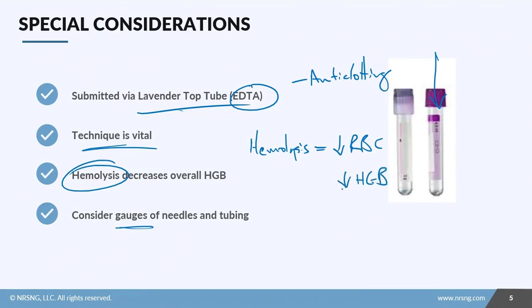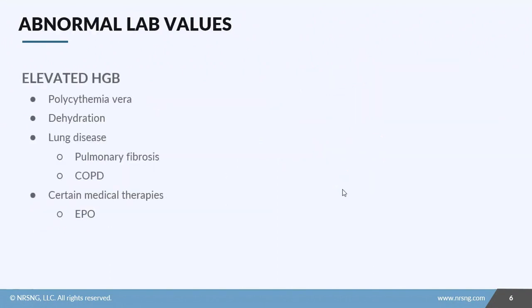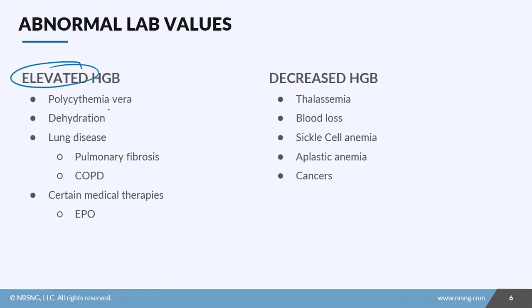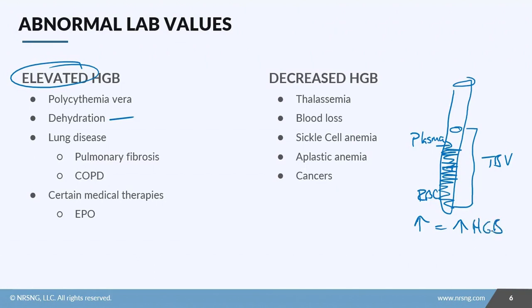What happens if our hemoglobin values are abnormal? If your hemoglobin values are elevated, things that can cause it would be dehydration. Here's your test tube—it's got your total blood volume, and this is the amount of red blood cells and this is plasma. If you're dehydrated, you have less water, less plasma, that means your RBCs go up, which means your hemoglobin increases.